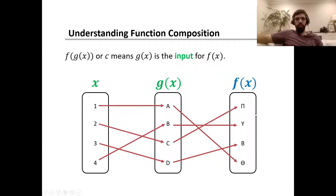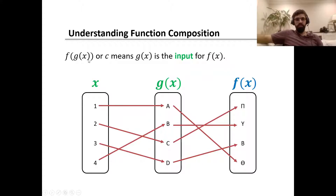When we talk about function composition, what it means is we can use a function — in this case g of x — as an input for another function. So instead of f of x, it's f of g of x. g of x is the input for the function f.